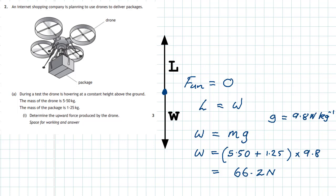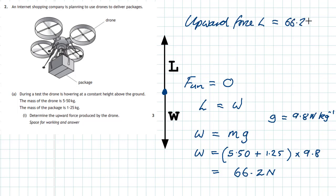So the upward force will have to be exactly 66.2 newtons as well. In order for the drone and the package to be stationary, the upward force L will be equal to 66.2 newtons.